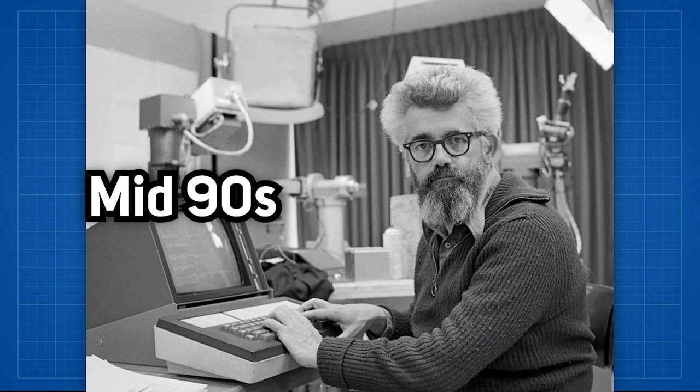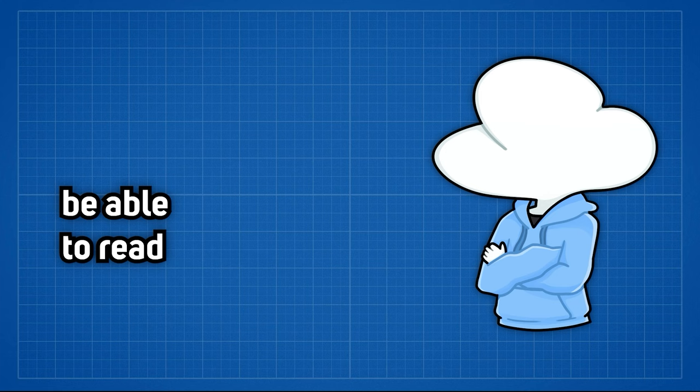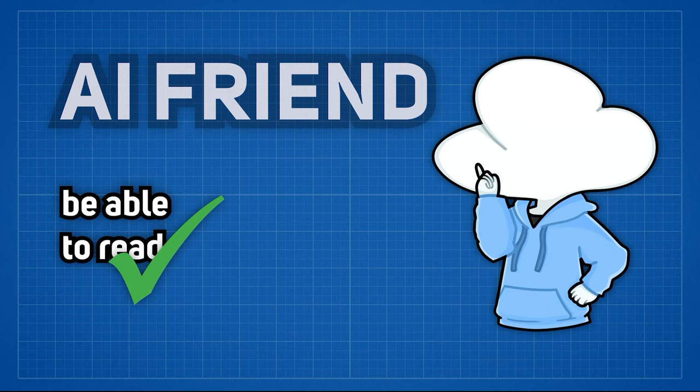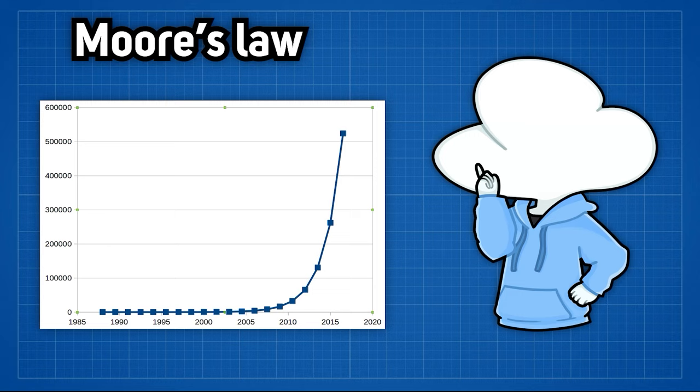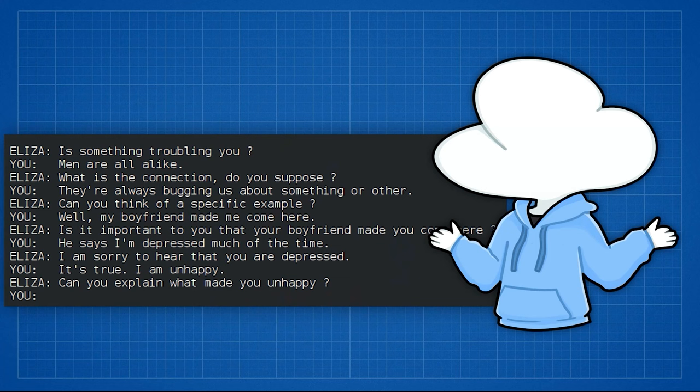This is also the time where researchers realized that finding solutions in specific isolated problems is much easier and more successful than finding the solution for general artificial intelligence. This may be due to Moore's Law playing a role in helping the progress of AI, but everything was going very well. In 1997, IBM's Deep Blue defeated world chess champion Gary Kasparov. And in 2011, IBM's Watson defeated the two greatest Jeopardy champions.